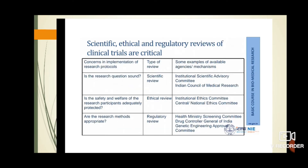These are different bodies under each type of review. In scientific review, we have the Institutional Scientific Advisory Committee and ICMR. For ethical review, ICMR and the National Ethics Committee. Regulatory review involves the Health Ministry, Sex Screening Committee, Drug Controller General of India, and the Genetic Engineering Approval Committee.